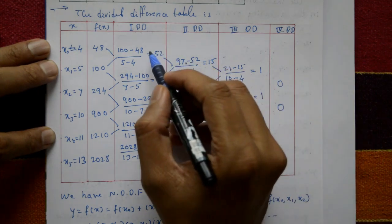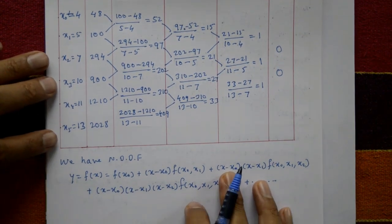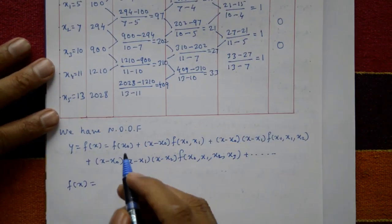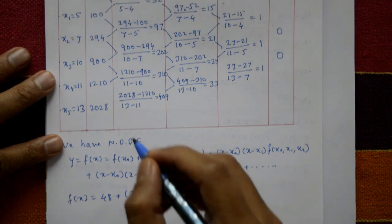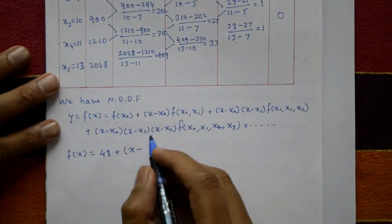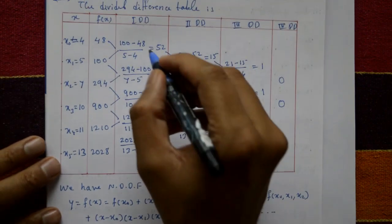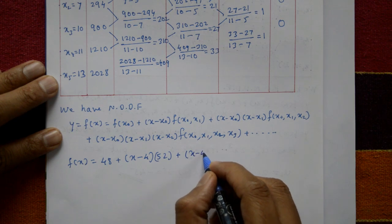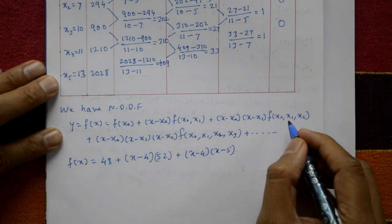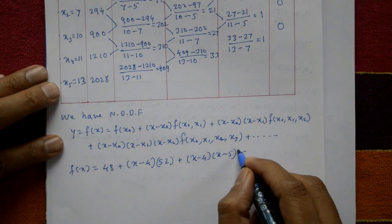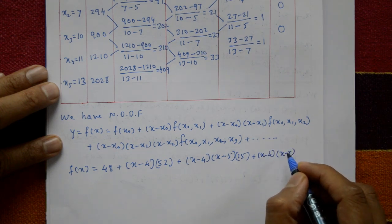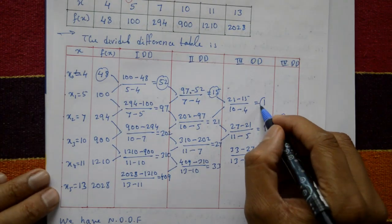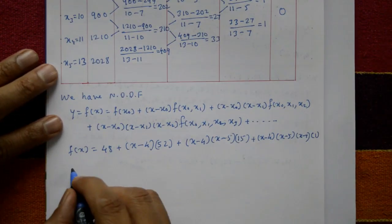Taking the leading diagonal (forward difference) values: f(x₀) = 48, first divided difference = 52, second divided difference = 15, third divided difference = 1, and the fourth is 0. So f(x) = 48 + (x - 4)·52 + (x - 4)(x - 5)·15 + (x - 4)(x - 5)(x - 7)·1.